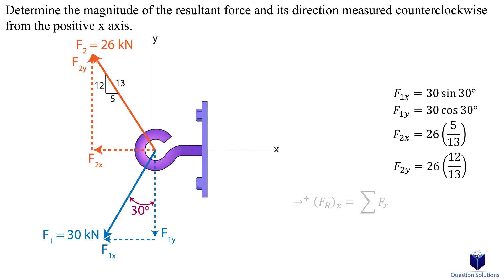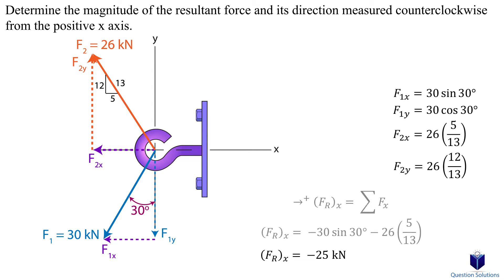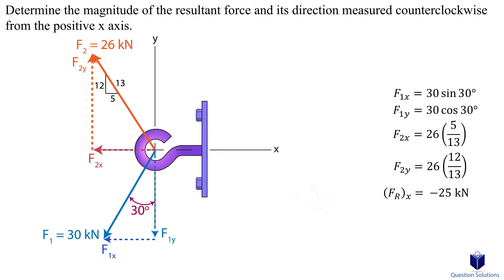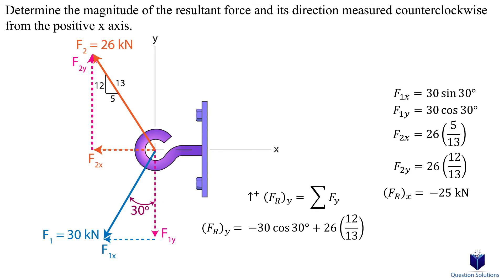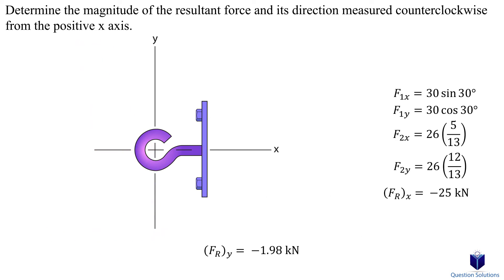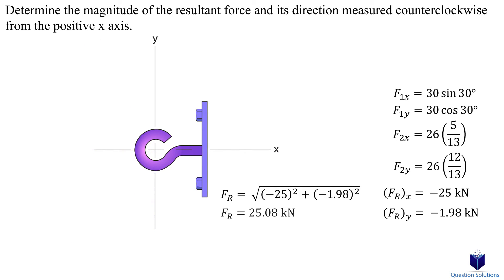Now that we have all the components, let's find the resultant force by adding up the x and y components, picking up and to the right as positive. Both x components point to the left, so they are both negative. For the y components, force F1's y component faces down while force F2's y component faces up, so remember to use proper positive and negative signs. Now that we have the resultant components, we can figure out the magnitude.